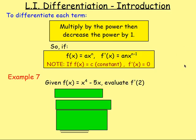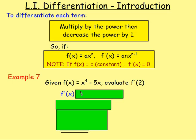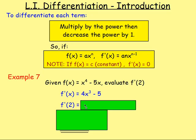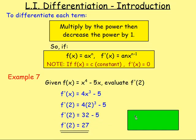Example 7: Given f(x) = x⁴ − 5x, evaluate f'(2). Differentiating f(x) gives f'(x). Multiply by the power: 4 times 1 gives 4, so x⁴ becomes 4x³. And −5x differentiates to −5. So f'(x) = 4x³ − 5. Now to find f'(2), we replace x with 2 in the derivative. So we get 4 times 2³ minus 5. 2³ is 8, times 4 gives 32, then subtract 5 gives 27. So f'(2) = 27.